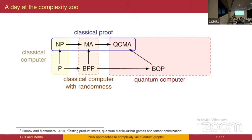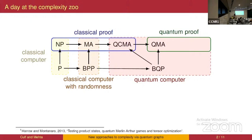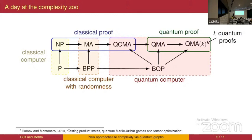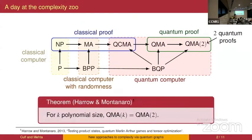In the quantum cases there are potentially larger classes. QMA is where the proof is a quantum state rather than a classical string. The main focus of this work is QMAk, where instead of one quantum proof, the verifier gets multiple quantum proofs — or equivalently, the proof state has partitions across which there's guaranteed no entanglement. An important result is that QMAk equals QMA2 for any polynomial number of proofs, so the distinction is simply between one proof or two proofs.